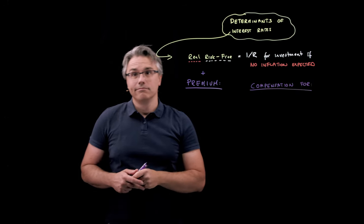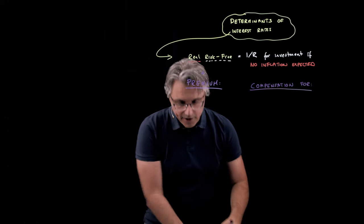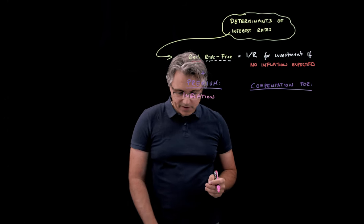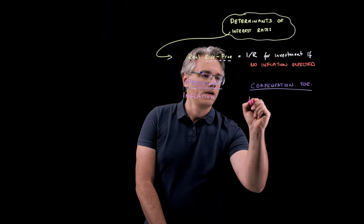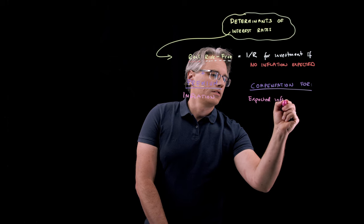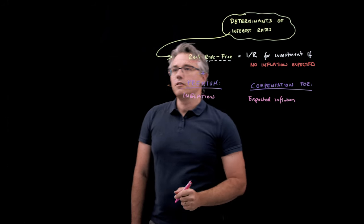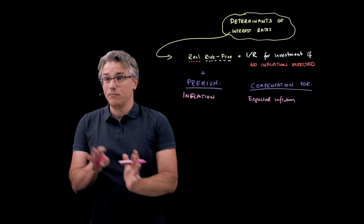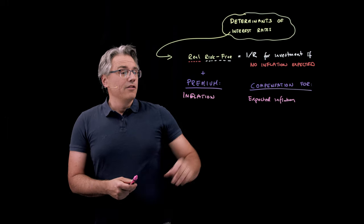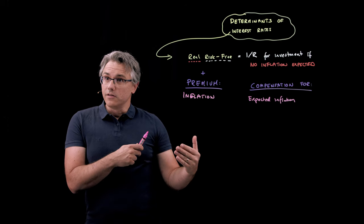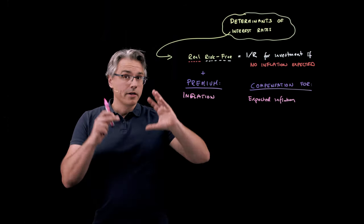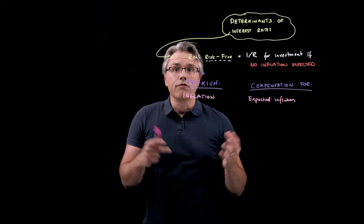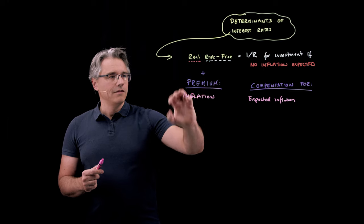The first premium we're going to talk about is the inflation premium. This is a premium for expected inflation. When I invest money, I don't just want to be compensated for deferring my present consumption. I also want to be compensated for expected inflation — so when I charge you an interest rate on a loan, I'm going to build into it my expectation of what inflation is going to be, because inflation represents the erosion of purchasing power.